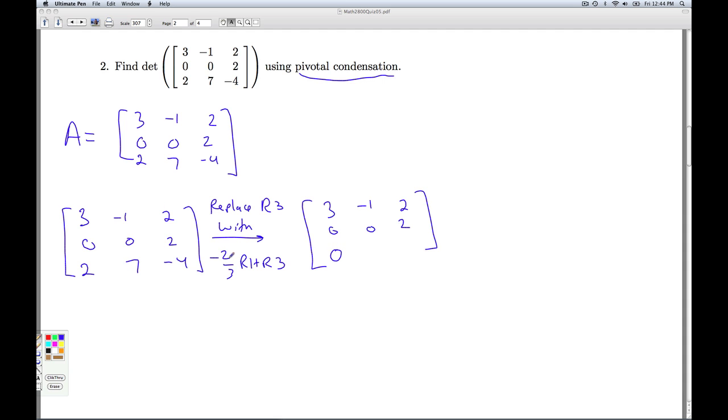Negative 2 thirds times negative 1 is a positive 2 thirds. I've got to add that to 7. And 7 is 21 thirds. So that gives me 23 thirds. Negative 2 thirds times 2 is negative 4 thirds minus 4. That's minus 12 thirds. That's negative 16 thirds. So that's what I get there.